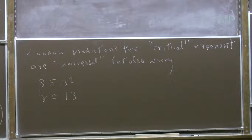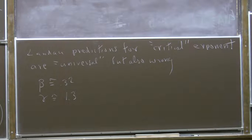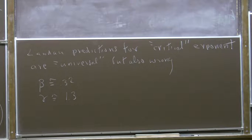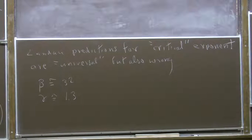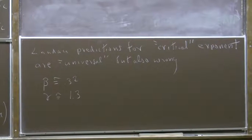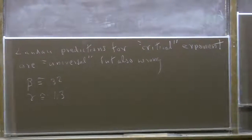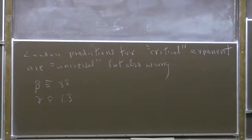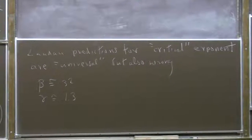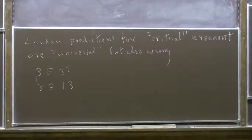Universality is a great idea, but there's something wrong with our predictions. The predictions followed from such mild assumptions, which we've now learned must be wrong, that we can't think of the Helmholtz free energy close to the critical temperature as being a non-singular function. It actually has singular behavior, and in order to make correct predictions, we have to understand that singular behavior better.